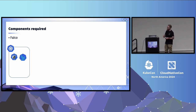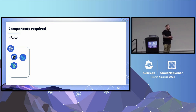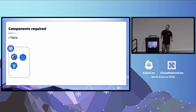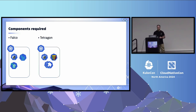Falco has another component called the Falco server, which is mainly a rule-based engine — not an operator, a server. It's not required but commonly used. Also, Falco Sidekick is a component we may use to get data out of Falco. Then we have Tetragon. Tetragon, on top of the agents, has an operator.